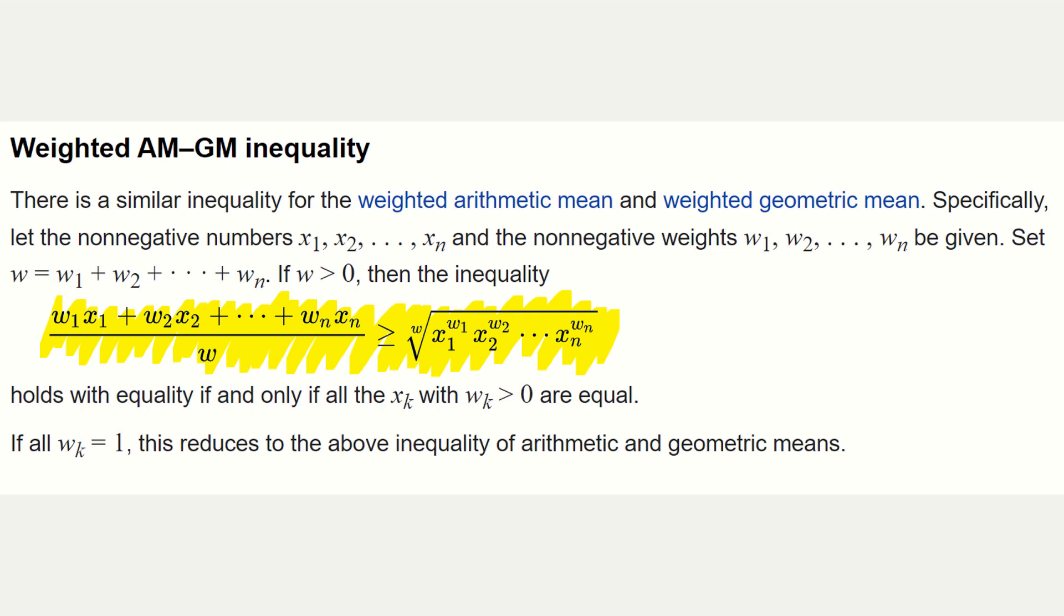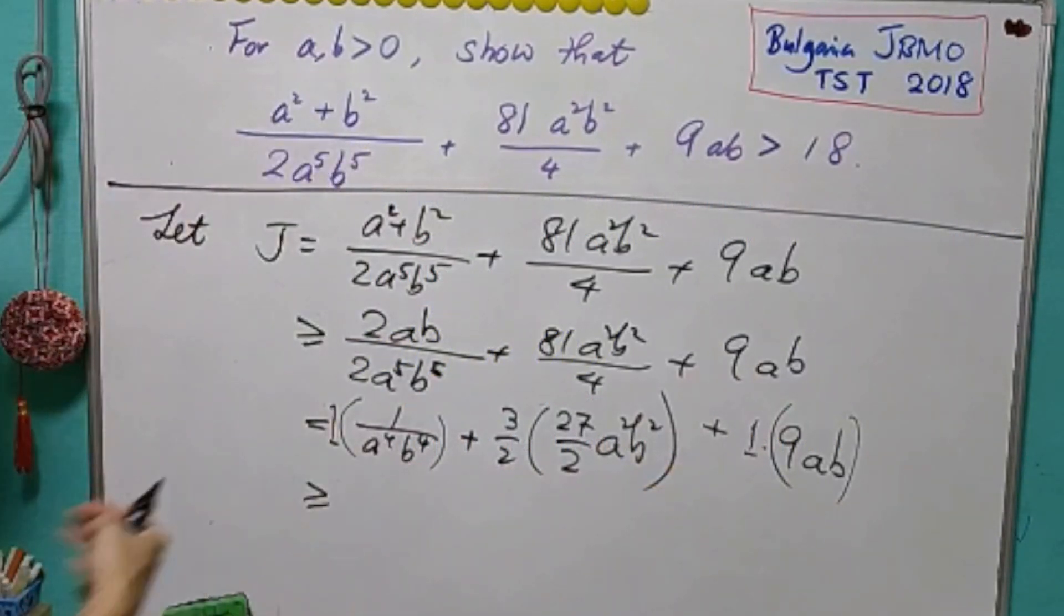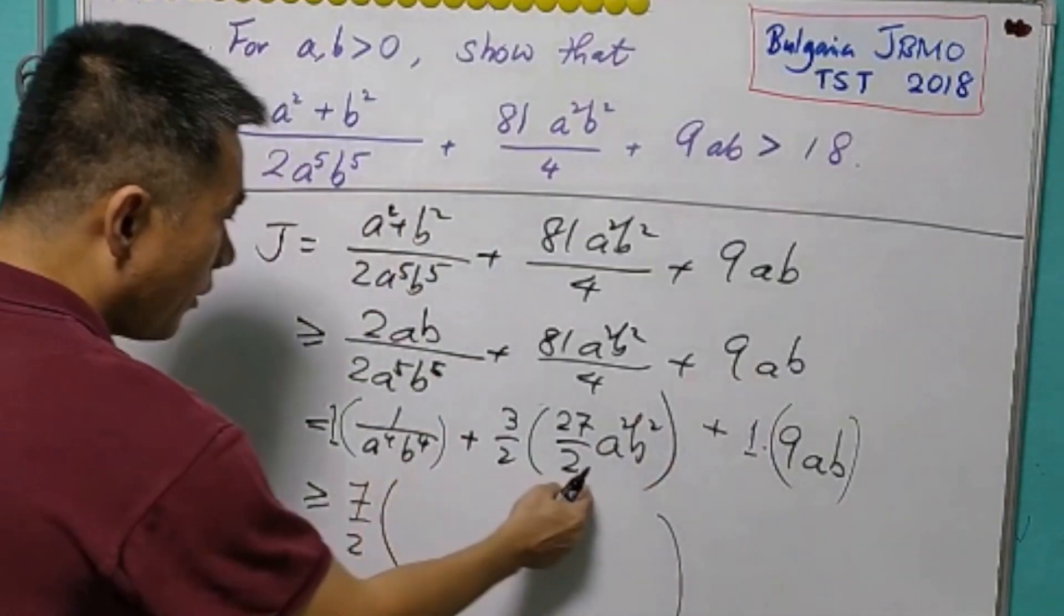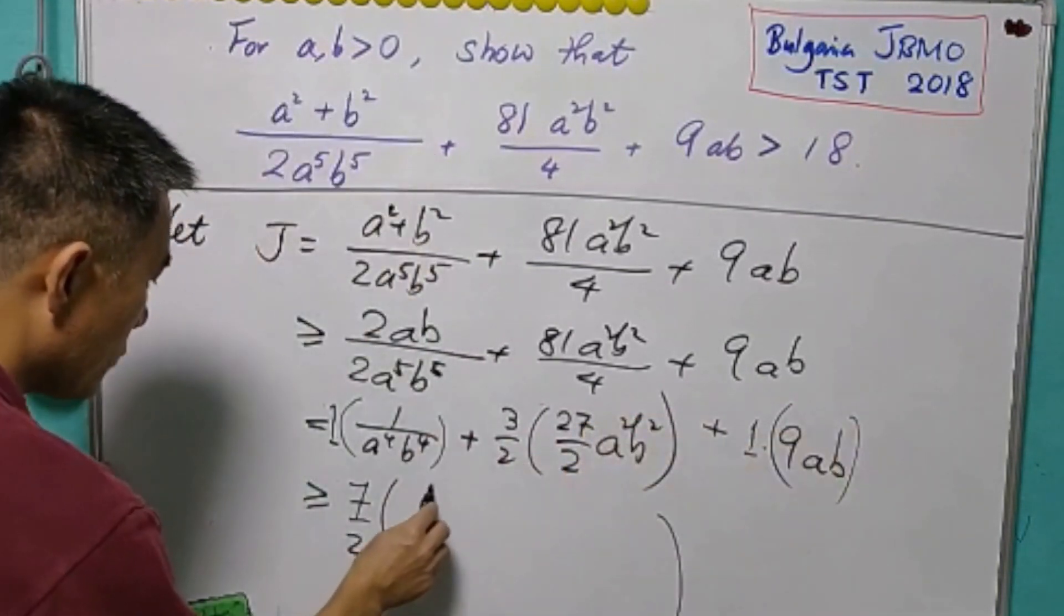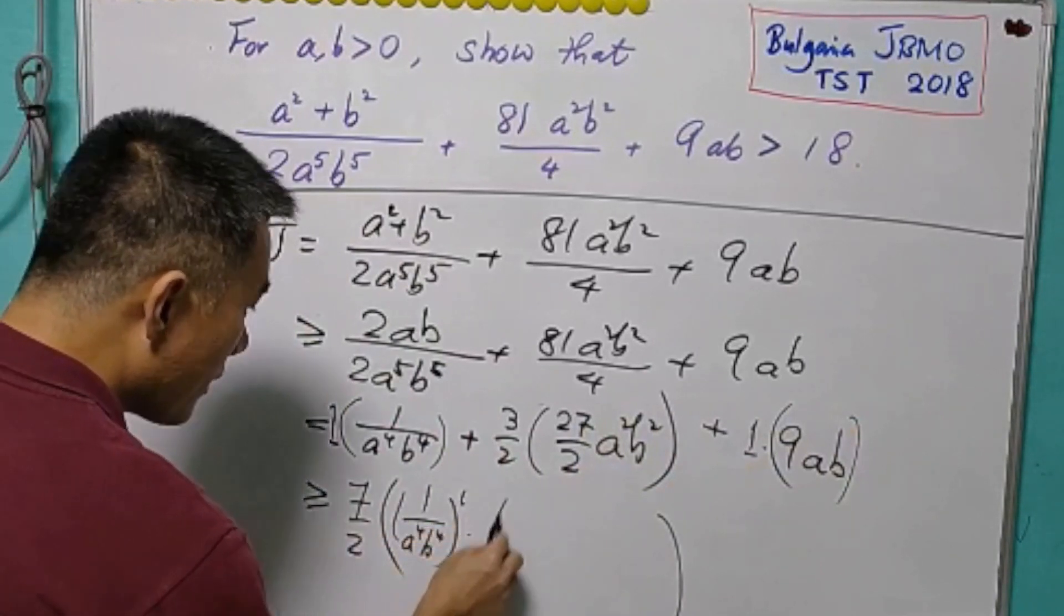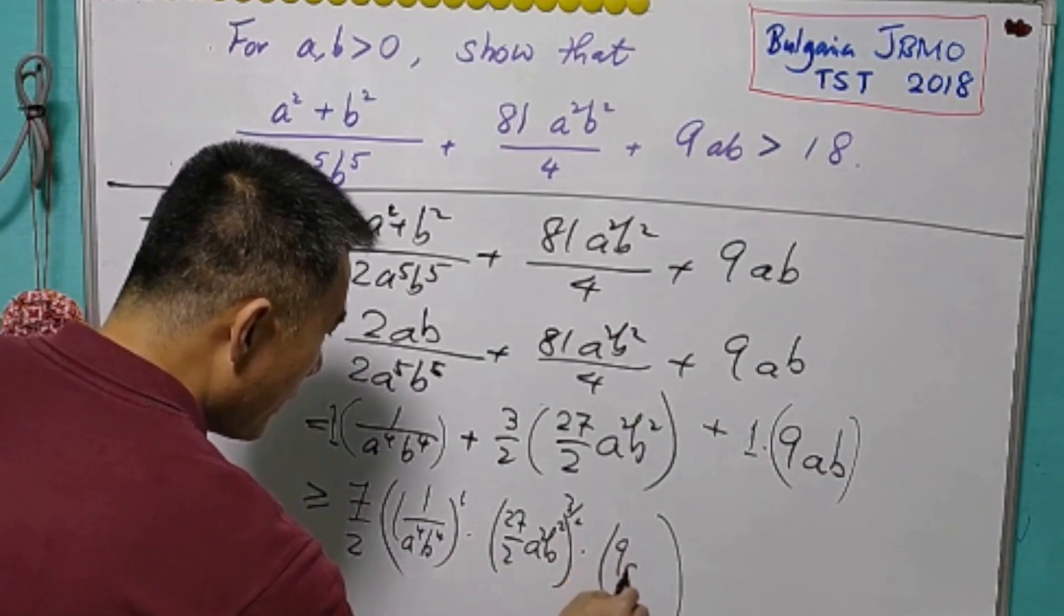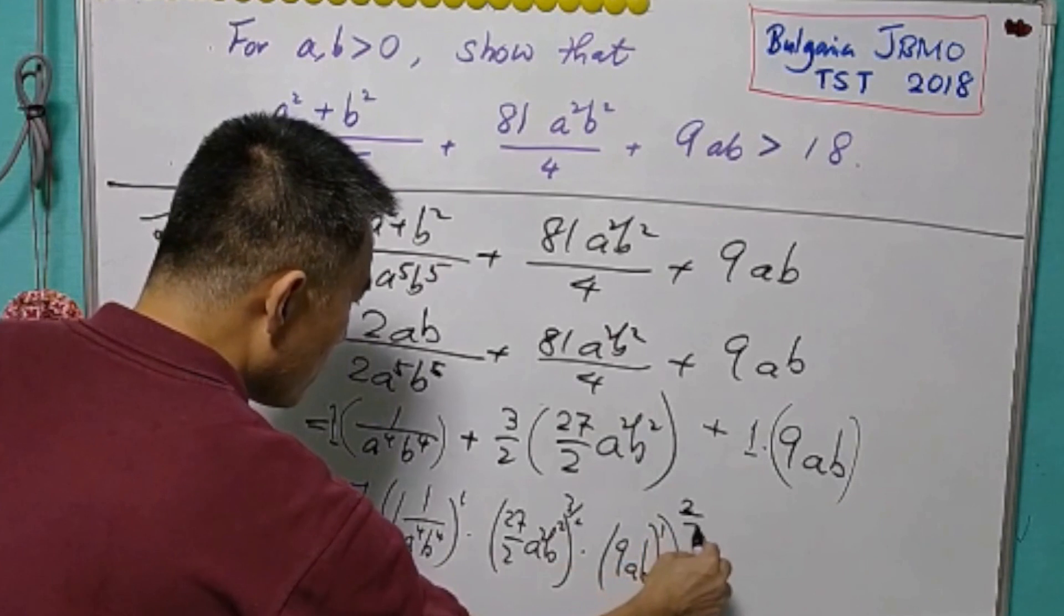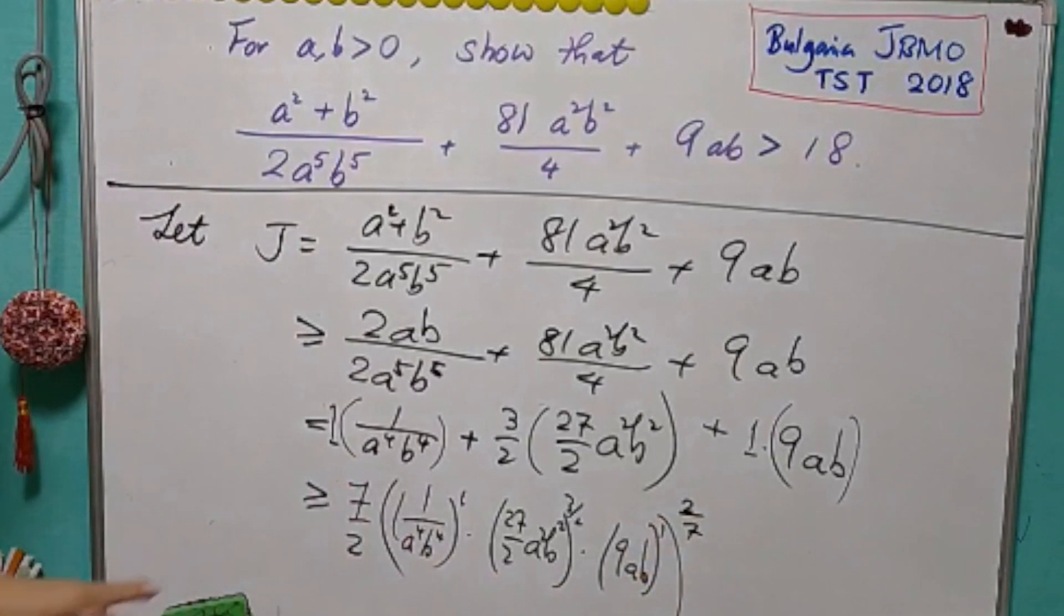Using weighted AM-GM inequality, this will be greater than or equal to the sum of the coefficients that is equal to 1 plus 3/2 plus 1. It is 7/2. And take the product of all this to the power of the corresponding coefficient. That is 1 over a⁴b⁴ to the power of 1 times 27 over 2 a²b² to the power of 3/2 times 9ab to the power of 1. And the whole thing to the power of the reciprocal of this number. That is, in this case, 2 over 7.